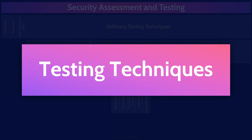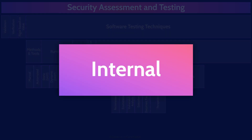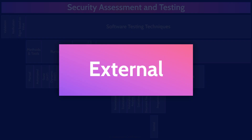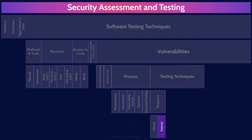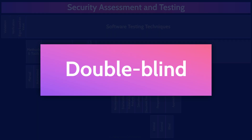When it comes to testing, there are a wide variety of techniques divided into separate approaches. Perspective refers to where the tester is performing the test from — internal means testing from within the organization's network, external means from outside. Blind testing gives the assessor little or no information about the target, though the target's IT and security teams know the test is coming. Double blind means neither the ethical hacker nor the organization's security operations team knows the simulated attack is occurring, testing both the attacker's ability to get in and the organization's ability to detect and respond.